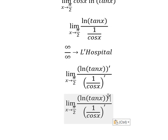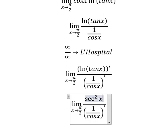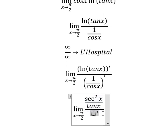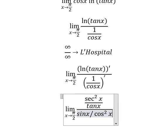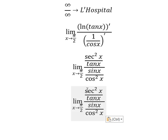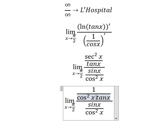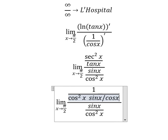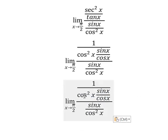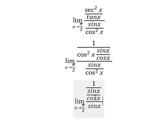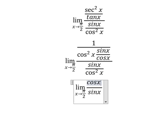So this gives us sec²(x) over tan(x), which is sine x over cos²(x). We know that sec²(x) equals one over cos²(x), and tan(x) equals sine x over cosine x. Now we simplify — cosine x cancels with cosine x, giving us cosine x over cosine x.